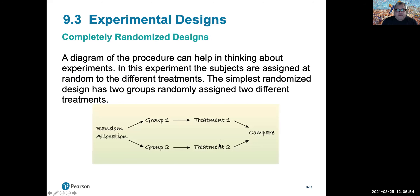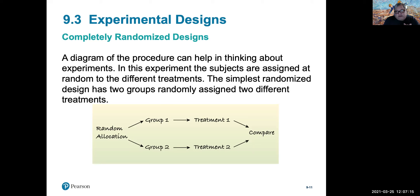Here is a drawing of what we would call a randomized design. We first randomize experimental subjects into group one and group two, then offer one treatment to each group, and compare the treatment results to see if the different treatments provide different results.